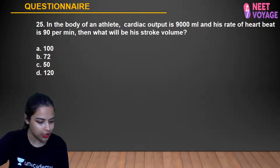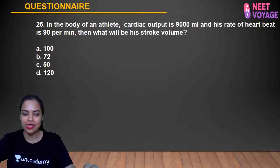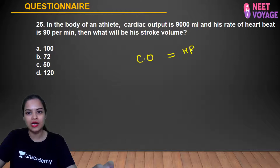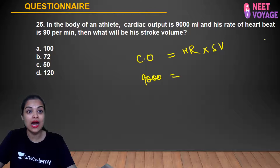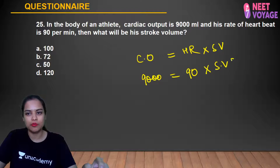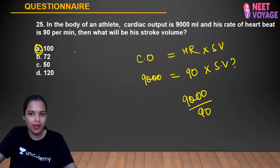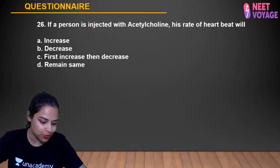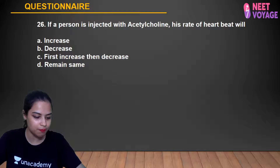Question 25: In the body of an athlete, cardiac output is 9,000 ml and heart rate is 90 per minute. What is the stroke volume? Cardiac output = Heart rate × Stroke volume. So stroke volume = 9,000 ÷ 90 = 100 ml. A is the right answer. Alok, Sabah, Anusha, Shashank, Simran, and Samreen gave the correct answer.